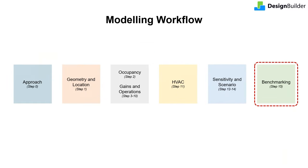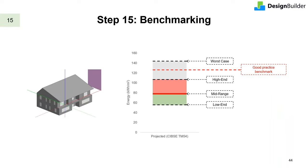The final part of TM54 is to compare the calculated performance against benchmarks of actual building data. This is a comparison of our demonstration model against the benchmark numbers given in CIBSE for good practice in this building type. The building design projection along with the high-end scenario is within the limit, so it's likely that the building — even if not operating as per design conditions — would still be better than the good practice benchmark.